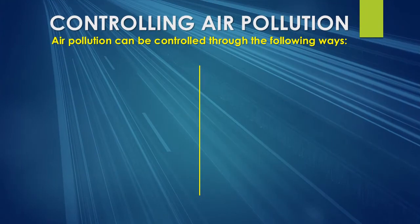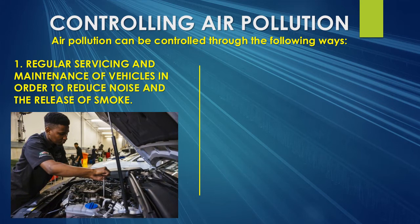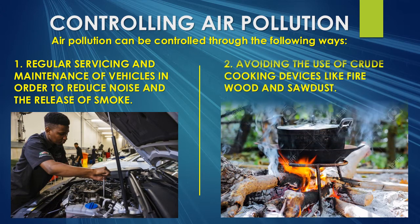Now that we know the causes of air pollution, how do we prevent or control it? The first way to prevent it is regular servicing and maintenance of our vehicles. As I explained, a vehicle has an engine that will eventually wear out. So from time to time, a person should take that vehicle to be serviced, because servicing it will reduce the smoke and the noise. In this way, you will be able to prevent air pollution. The same applies to our generators.